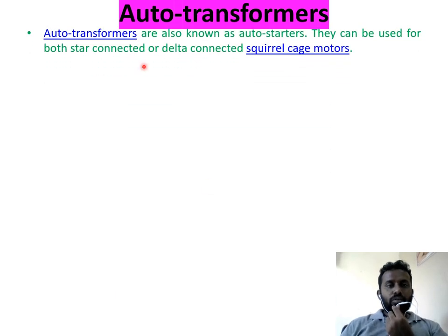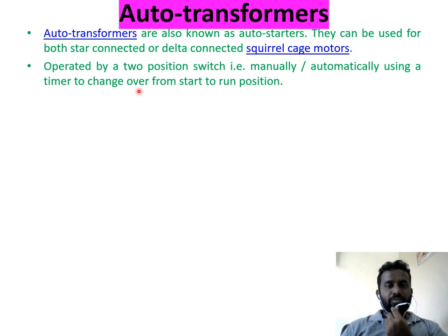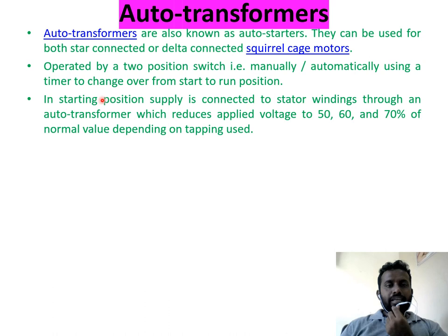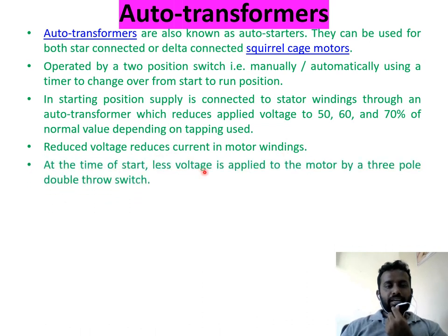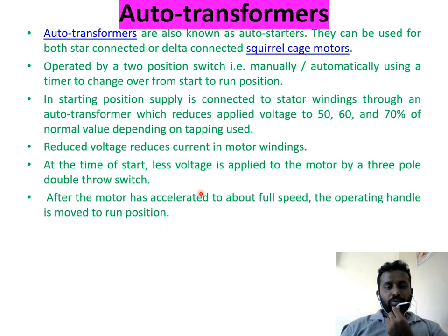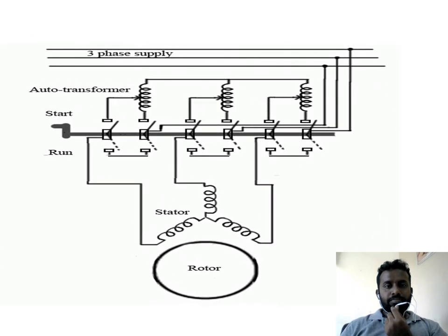Auto Transformer Starting: auto transformers, also known as auto starters, can be used for both star or delta connected squirrel cage motors operated by a two-position switch using a timer to change from start to run position. In starting position, supply is connected to stator windings through an auto transformer, which reduces the applied voltage to 50, 60, or 70 percent of normal value. Reduced voltage reduces current in the motor winding. After the motor has accelerated to full load speed, the operating handle is moved to run position, disconnecting the auto transformer.